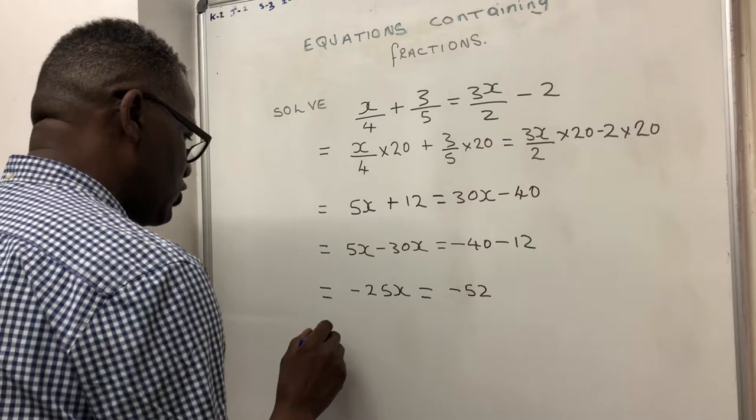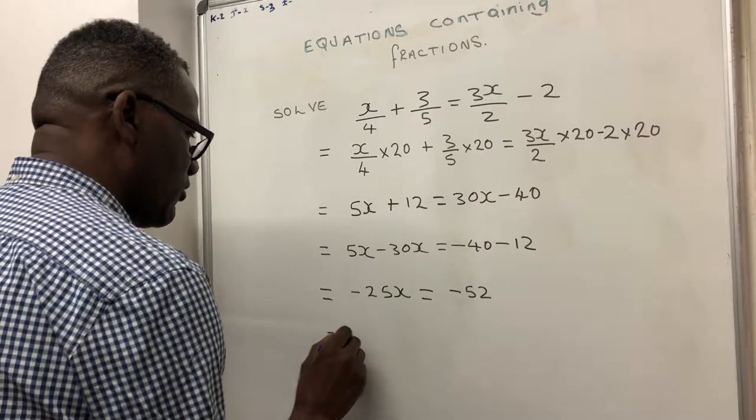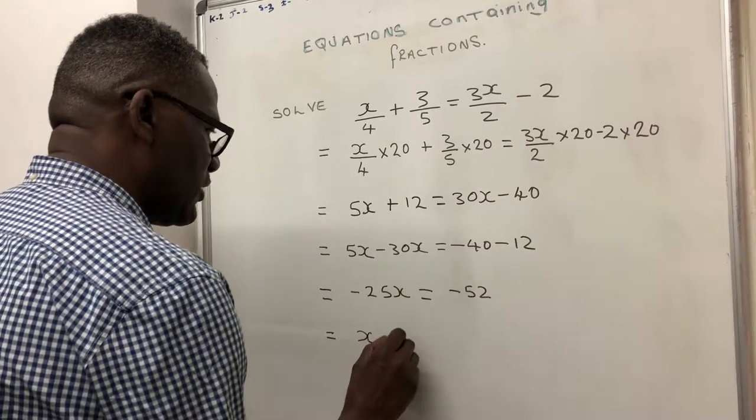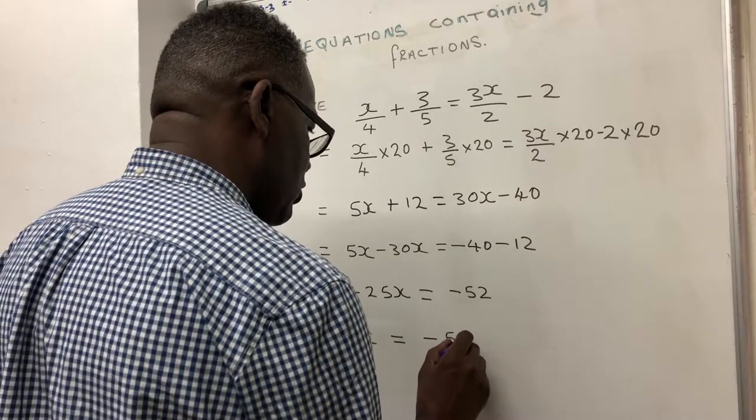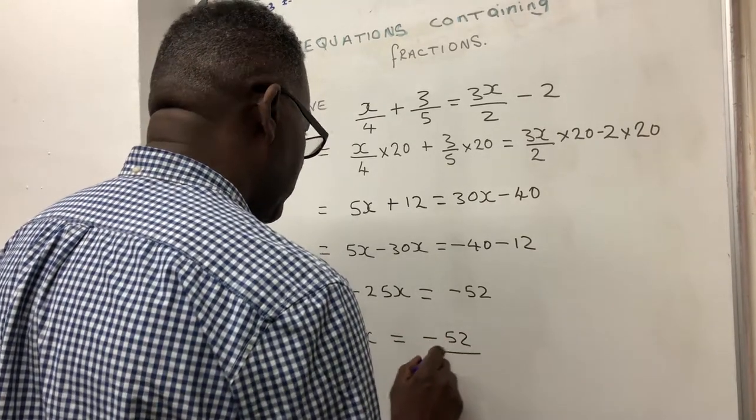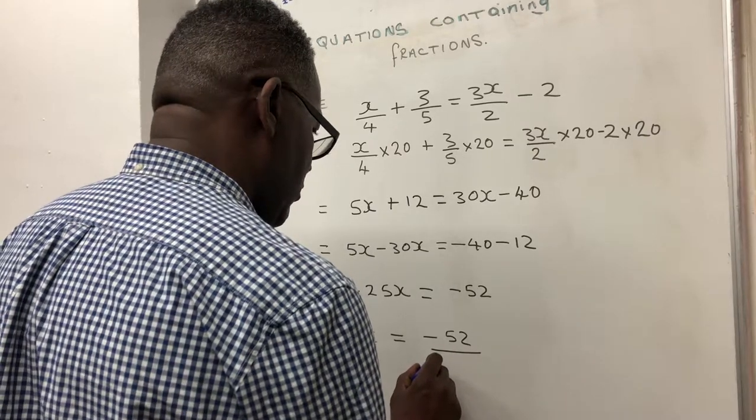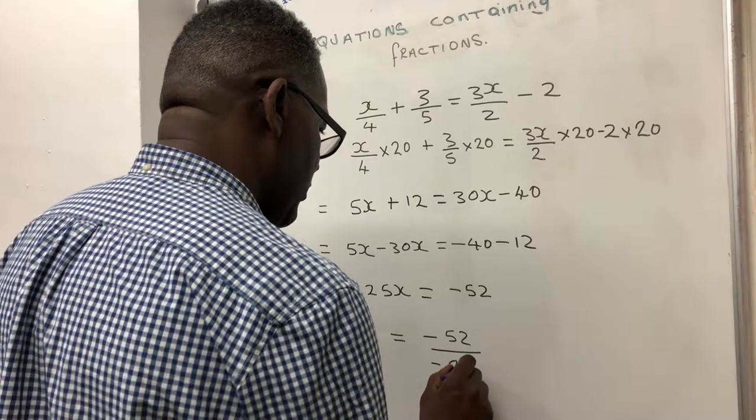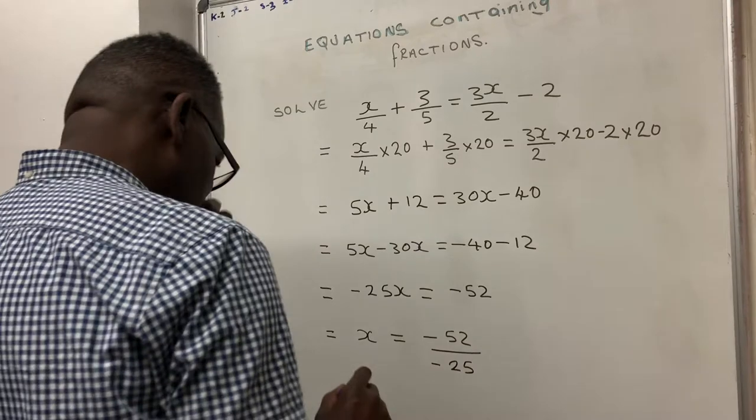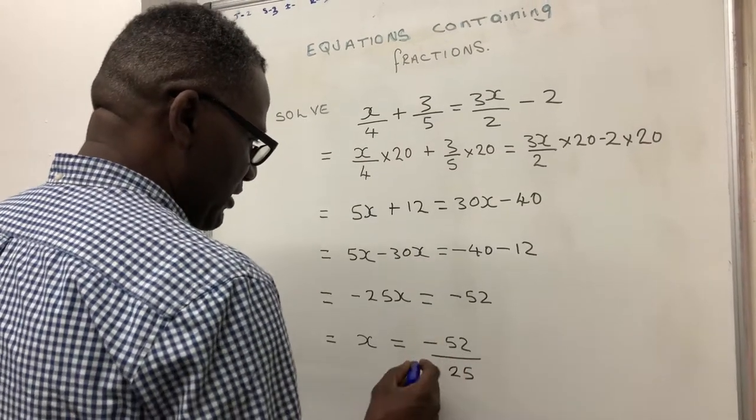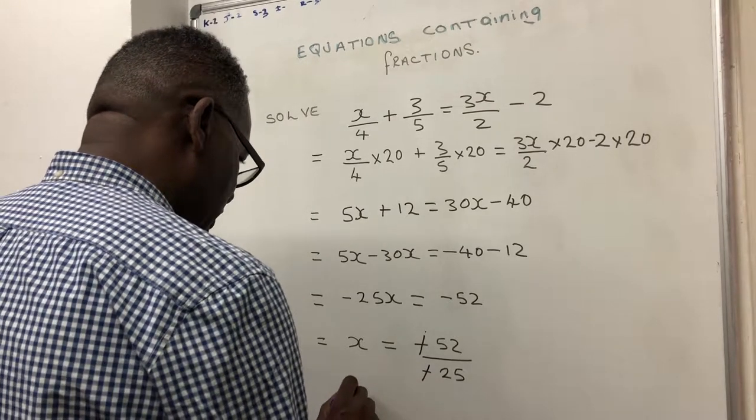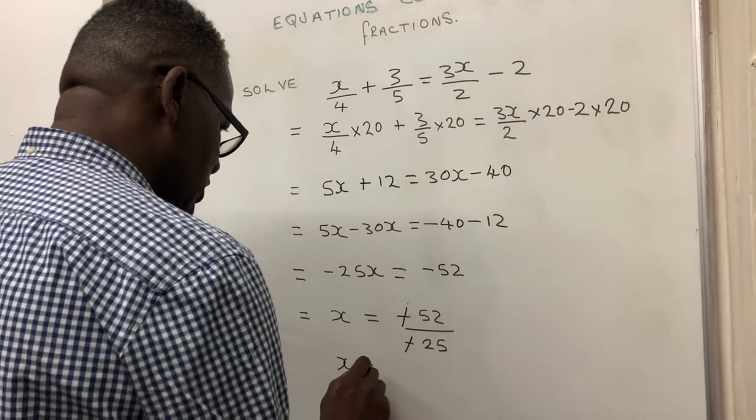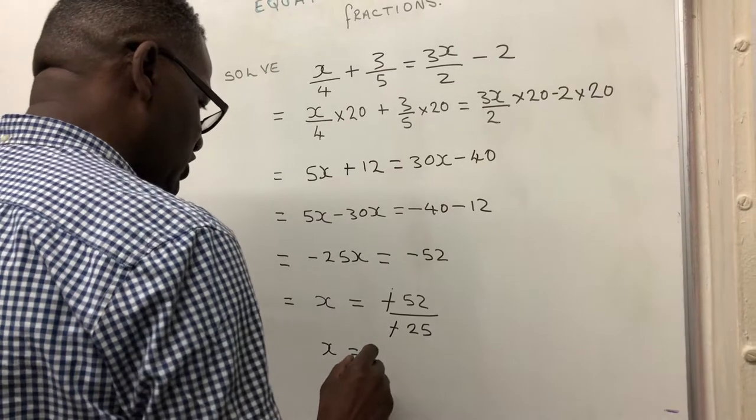So now I'm trying to find x. x = -52/-25, and because I have minus and minus they both cancel themselves out, so x is equal to 52/25.